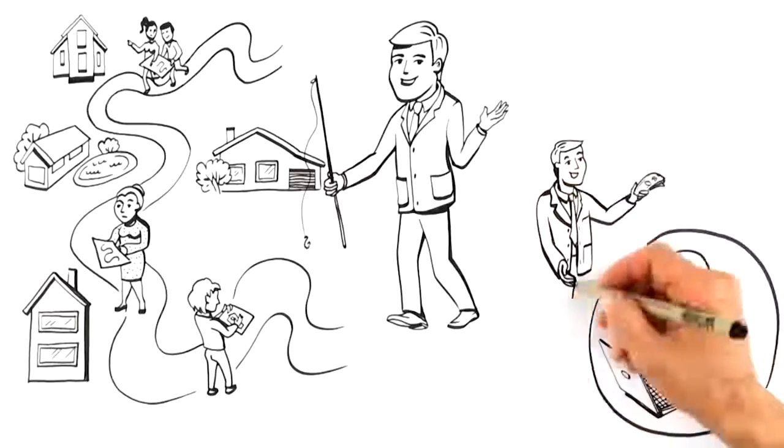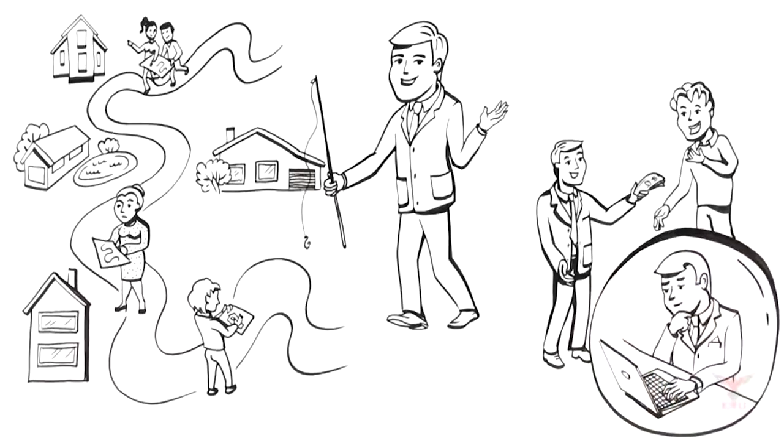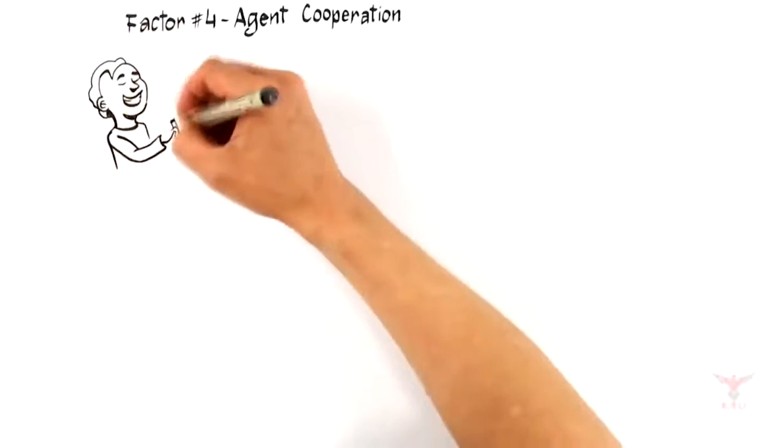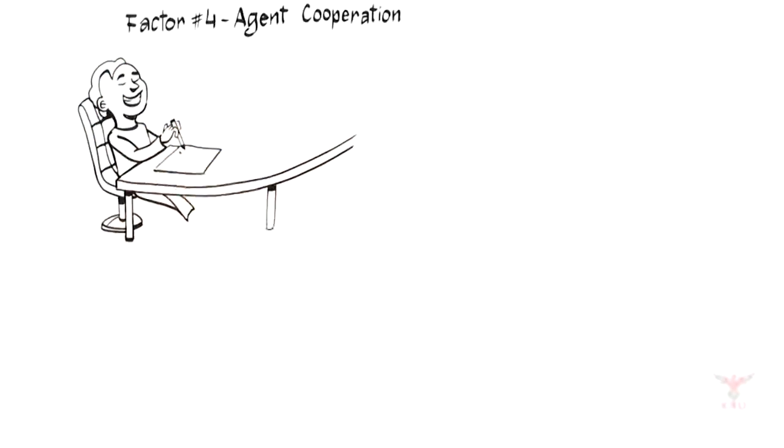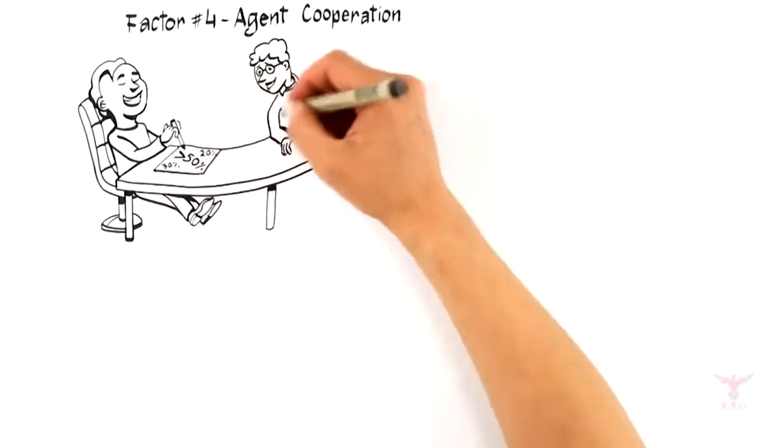Now, a widely known but little-discussed selling factor that significantly increases the likelihood of you getting a top-dollar offer is factor number four: agent cooperation. Agent cooperation simply predicts that there is a greater than 50% chance that once your home is exposed to the market, another real estate professional will bring you a buyer.